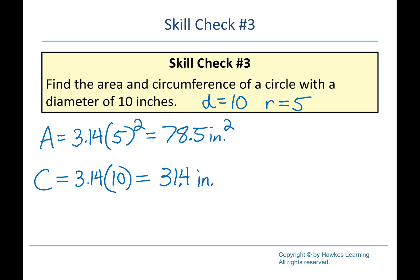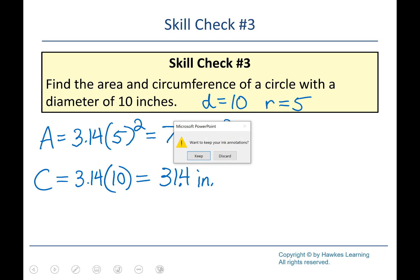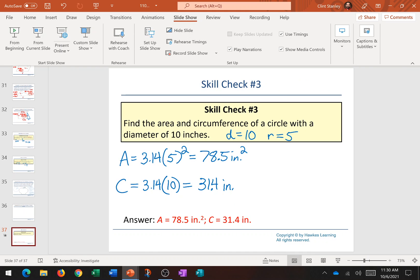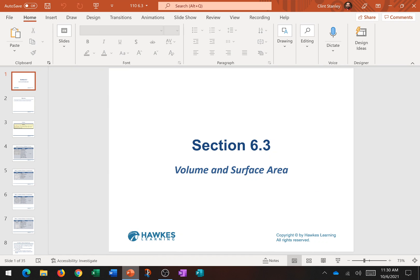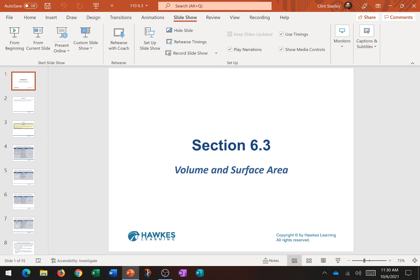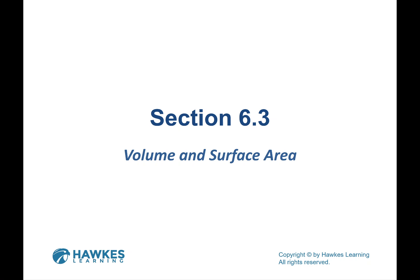I'll give you formulas — don't worry about memorizing them, just make sure you've got your list with formulas when you're doing the assignment. Most people don't have too much trouble with this section. Alright, that's 6-2. The other section in chapter 6 we're doing is 6-3, and in 6-3 we talk about some three-dimensional measurements.